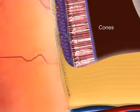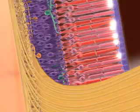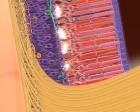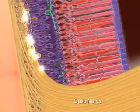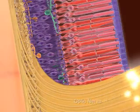The highest concentration of cones is in the fovea centralis. The rods and cones synapse with bipolar cells, which then synapse with the ganglia cells, whose axons form the optic nerve.